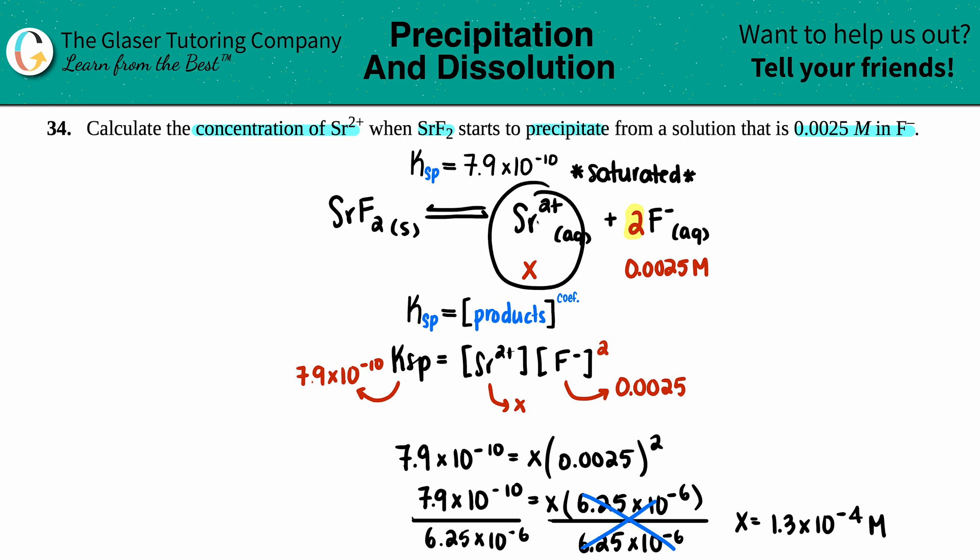So now always just go back up to what we were solving for. We were solving for the strontium ion, so Sr²⁺, and we labeled it as just x, so it would be the same number: 1.3 times 10 to the negative 4th molarity. And that's it.